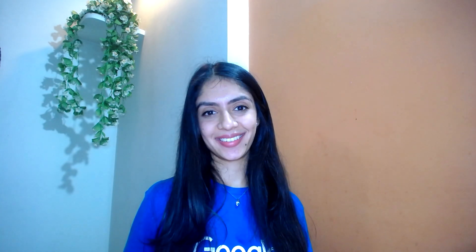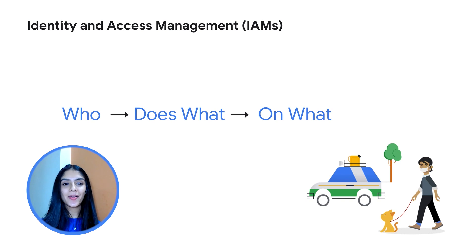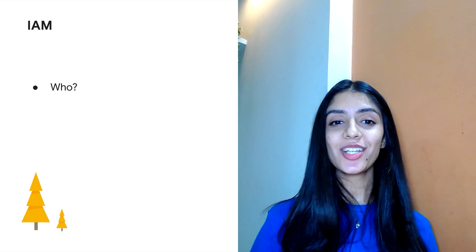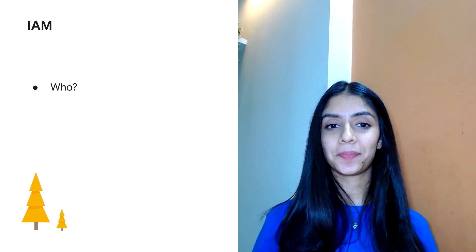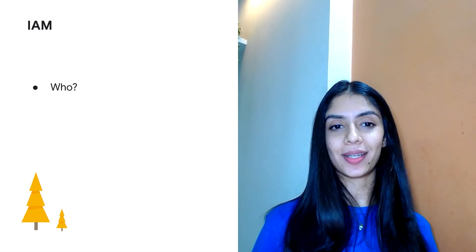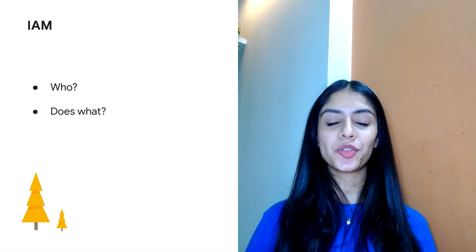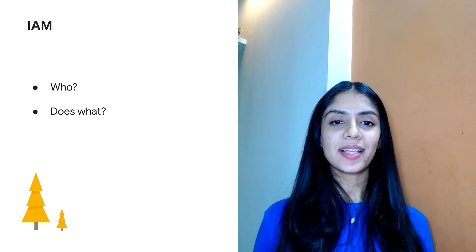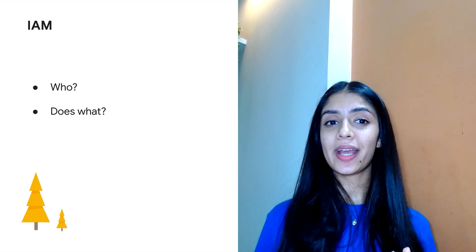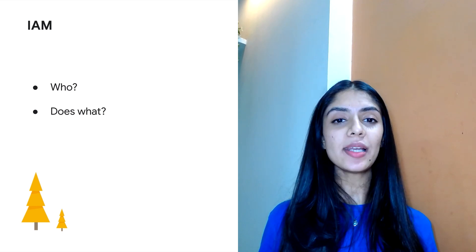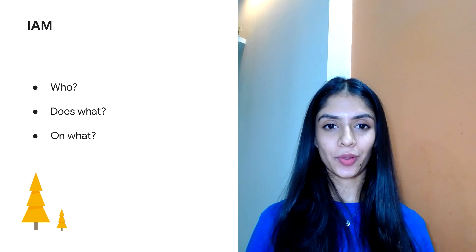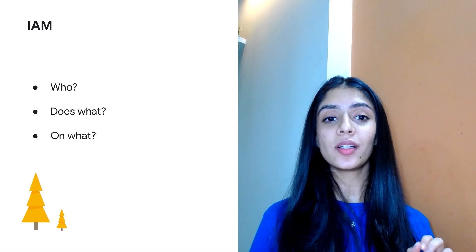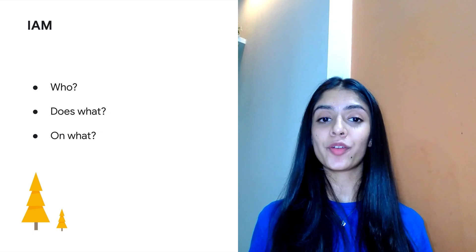It's important to understand three sections when we talk about Identity and Access Management, or IAM, on Google Cloud: the who, does what, and on what. The who is essentially the identity part — whether it's a single user, multiple users separately, or multiple users together as a group, which is what is recommended. The does what is the access or set of access controls the user has — for example, an admin role would allow you to create, modify, delete, and add other roles, whereas a viewer role would only allow you to read. And the on what talks about which resource these permissions are applied to — so a user granted access only to a particular Cloud SQL database cannot access anything else.